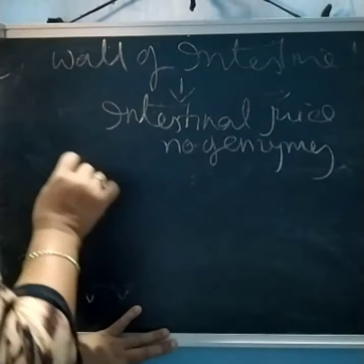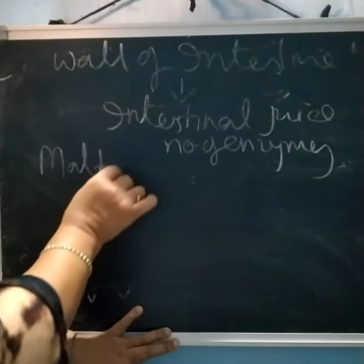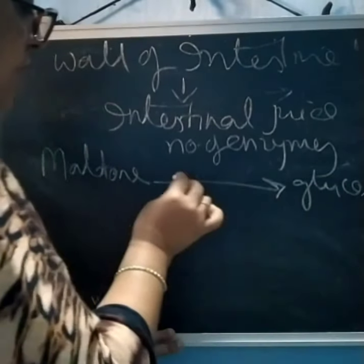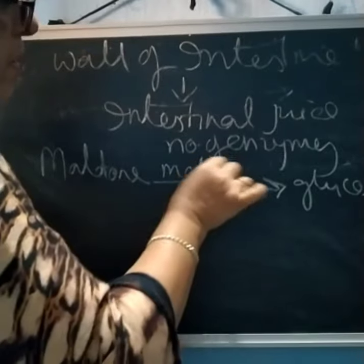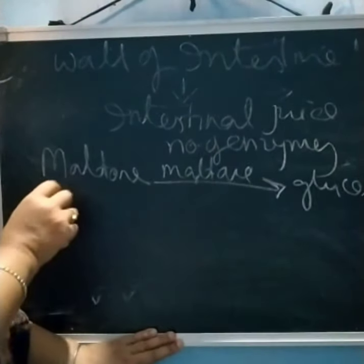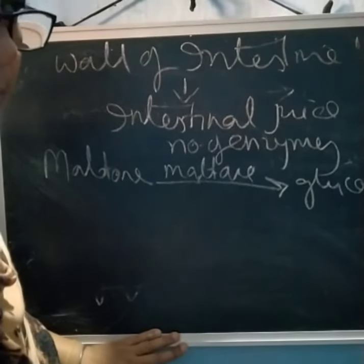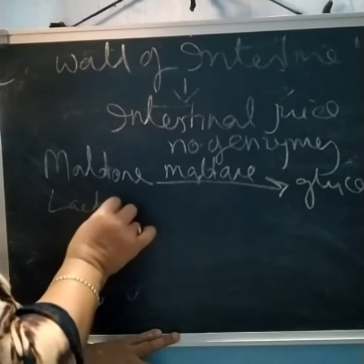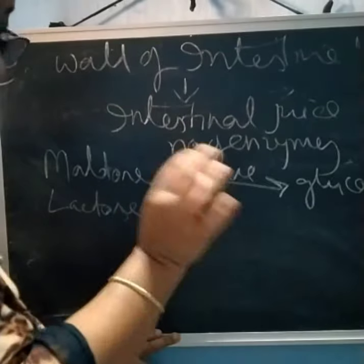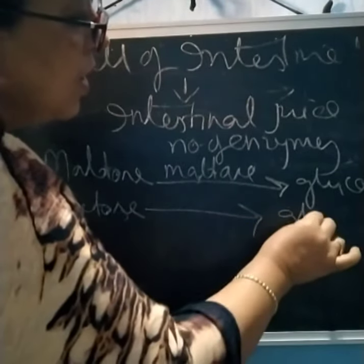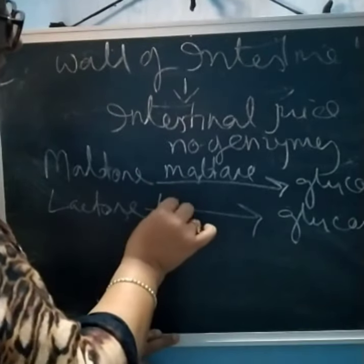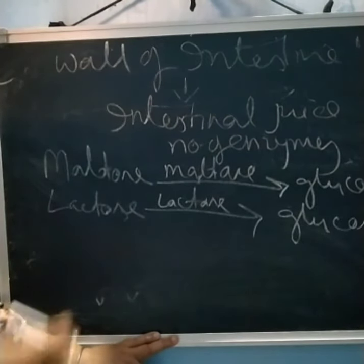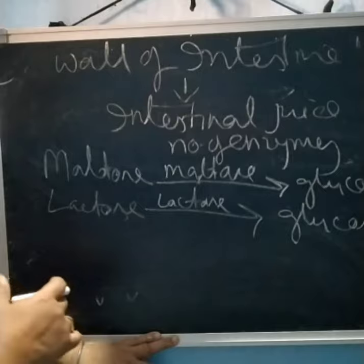Intestinal juice enzymes convert maltose into glucose by the enzyme maltase. If lactose is present — lactose is a sugar found in milk — it is also converted into glucose by the enzyme lactase. In this way, many different substances are converted into the ultimate product, glucose.